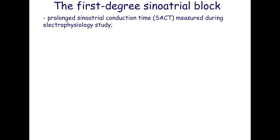The first-degree sinoatrial block is manifested by slow impulse conduction from the sinoatrial node to the atrium. It is not seen on the surface ECG because depolarization of the sinoatrial node is not visible.